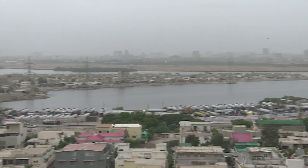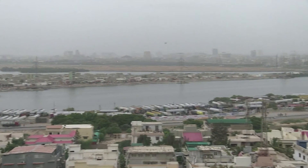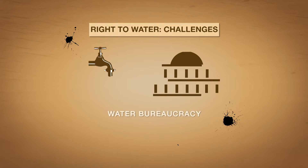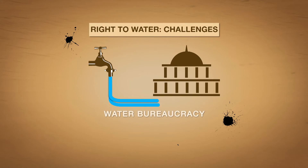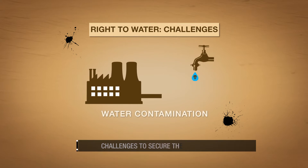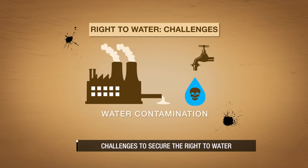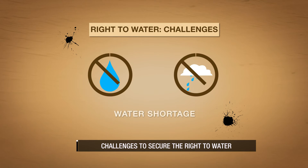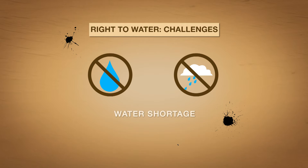So what are the factors that deprive South Asians of the right to water? Water bureaucracy — in simple words, mismanagement of water by the government, leading to poor allocation. Water contamination due to untested effluents from domestic and industrial sources. And absolute water shortage caused by rainfall deficit. These have led to loss of life.